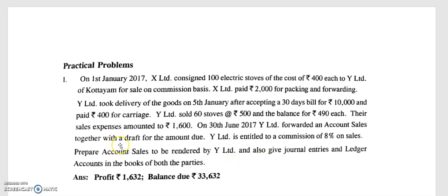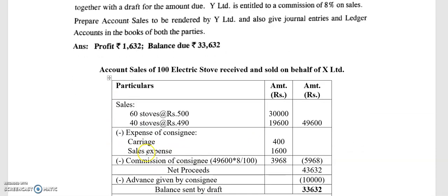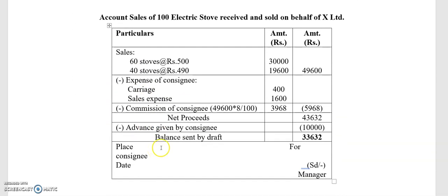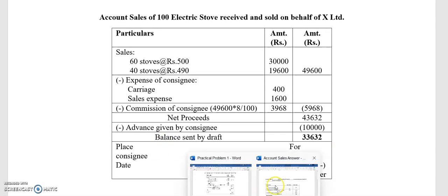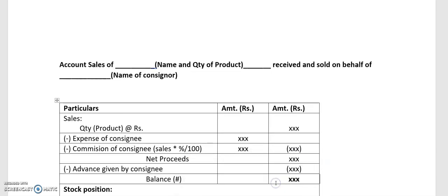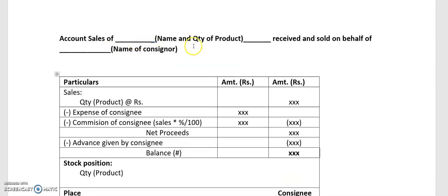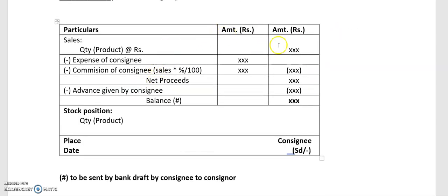Account sales has already been discussed in a previous session. The account sales format includes the name and quantity of product received and sold on behalf of the consignor. The particulars maintained include sales, consignment expenses, commission, and bank balance.